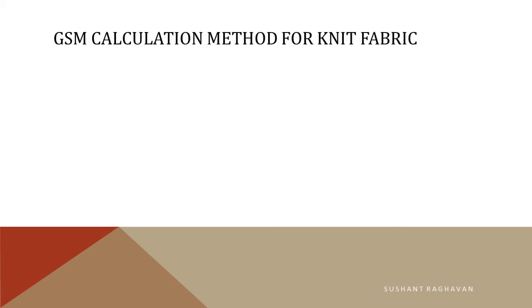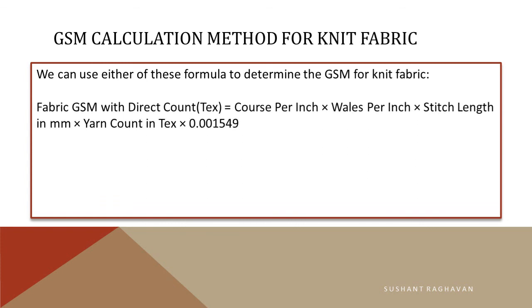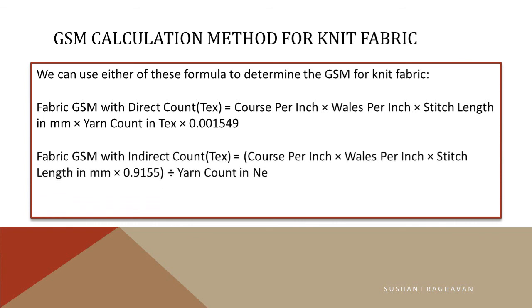For the GSM calculation method for knit fabric, we can use either of these formulas. Fabric GSM with direct count (tex) = courses per inch × wales per inch × stitch length in mm × yarn count in tex × 0.001549. Fabric GSM with indirect count (Ne) = courses per inch × wales per inch × stitch length in mm × 0.9155 ÷ yarn count in Ne. Ne is an indirect measure of linear density.